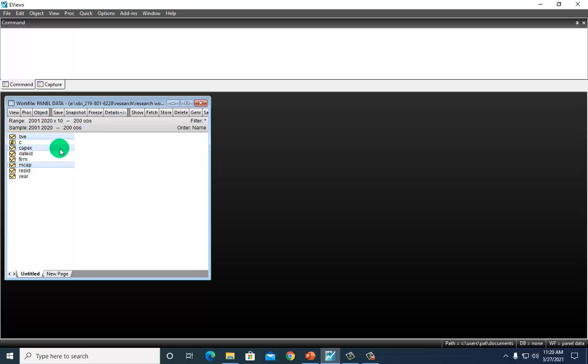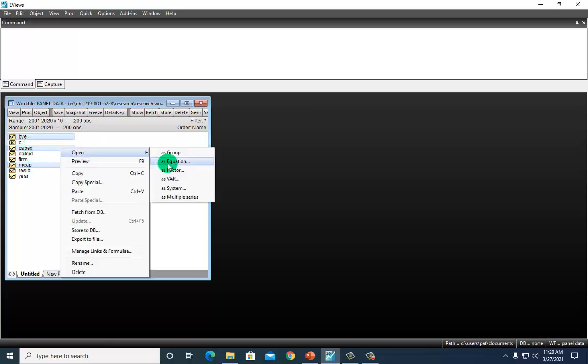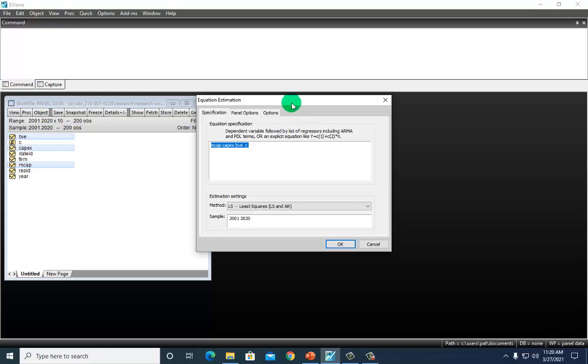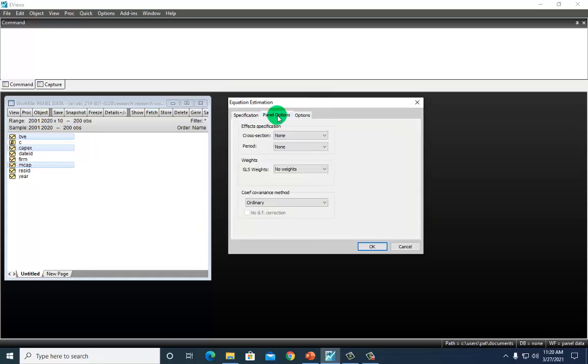I'm going to right-click on any of these and open as equation. And when I do so, I go to panel options and for cross-section I click on fixed.